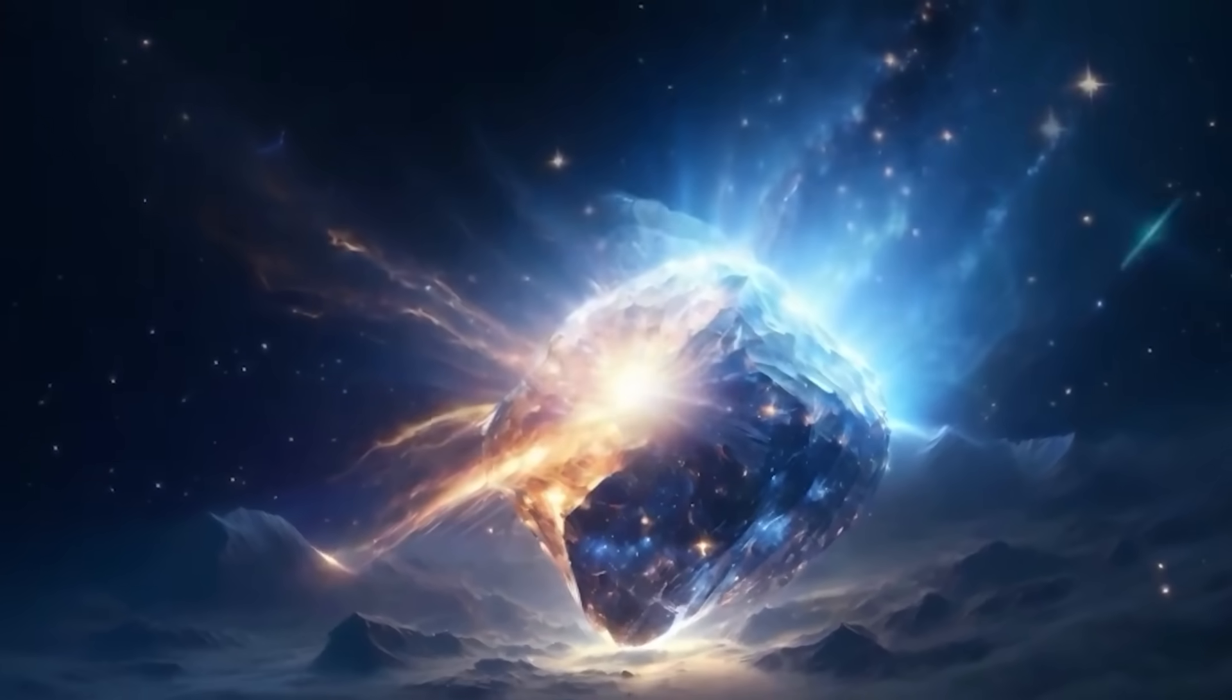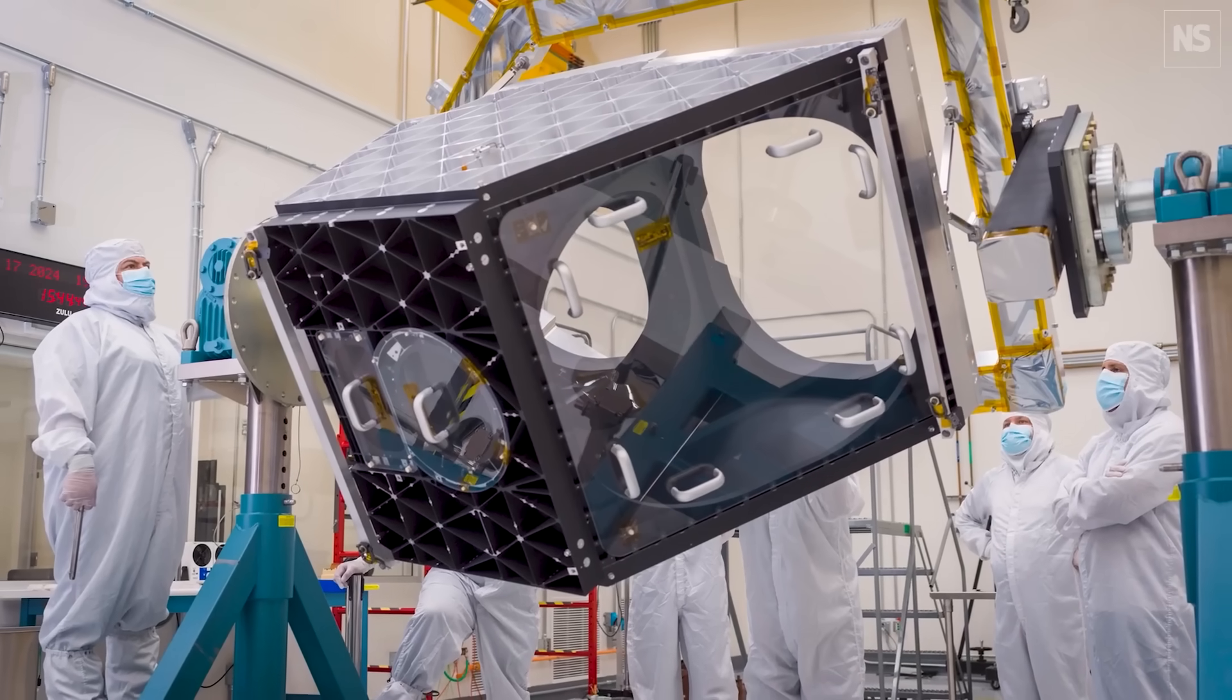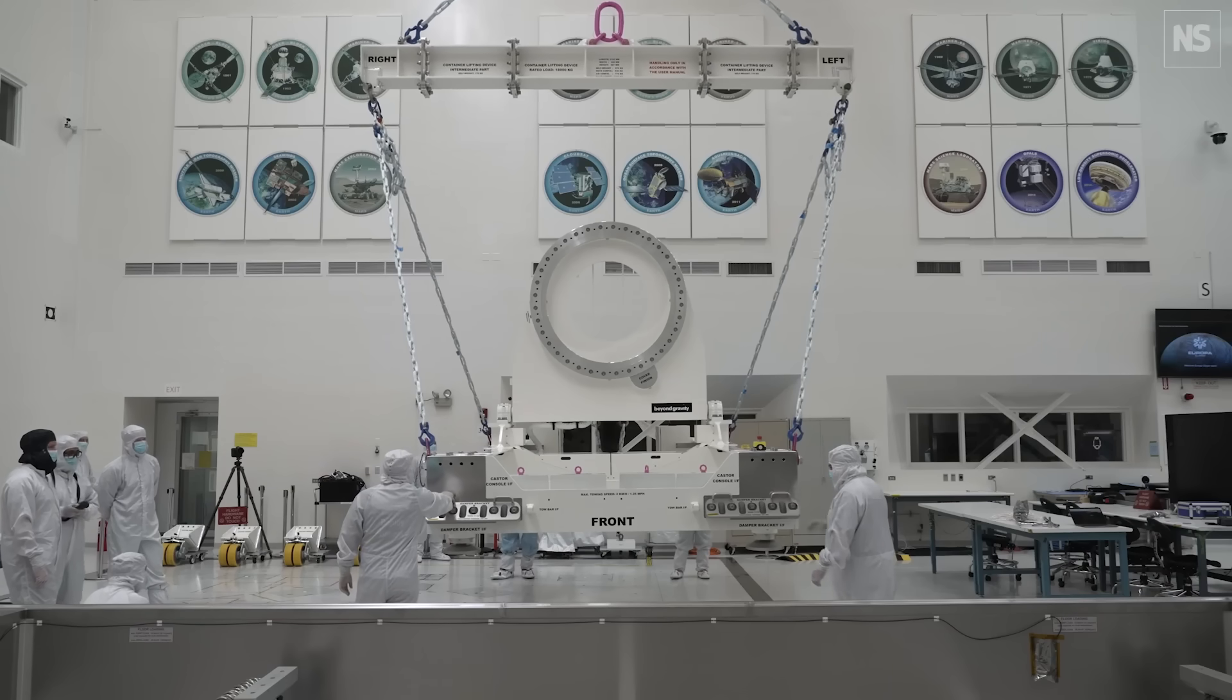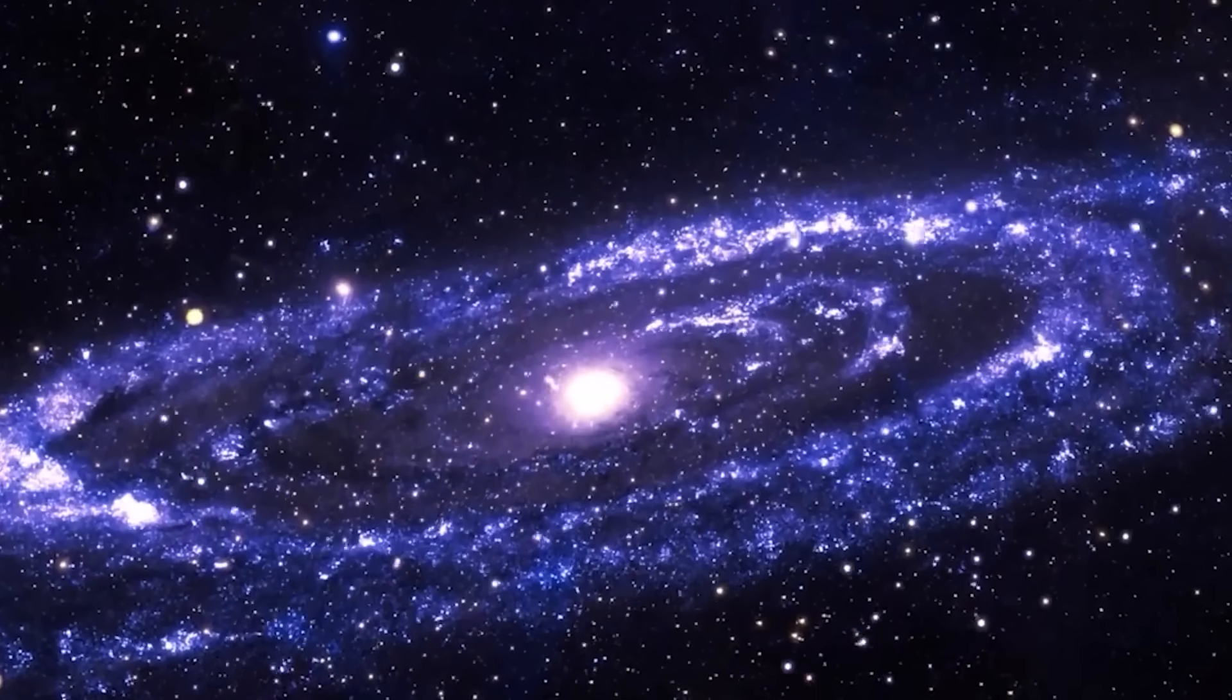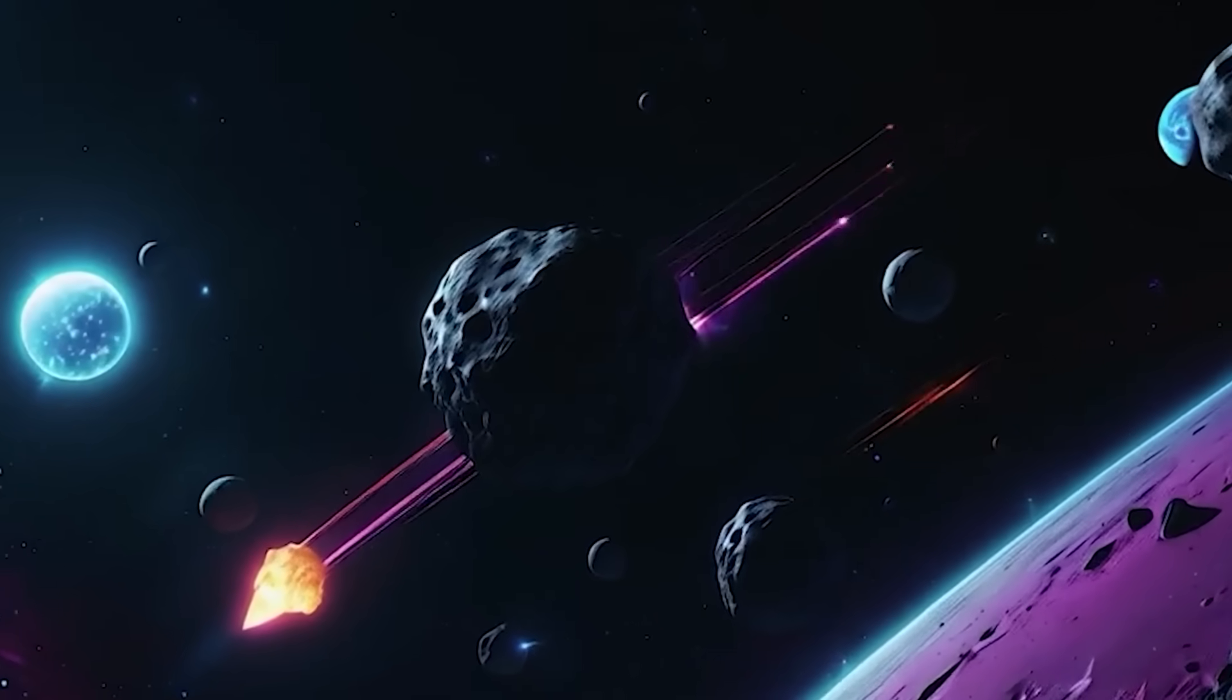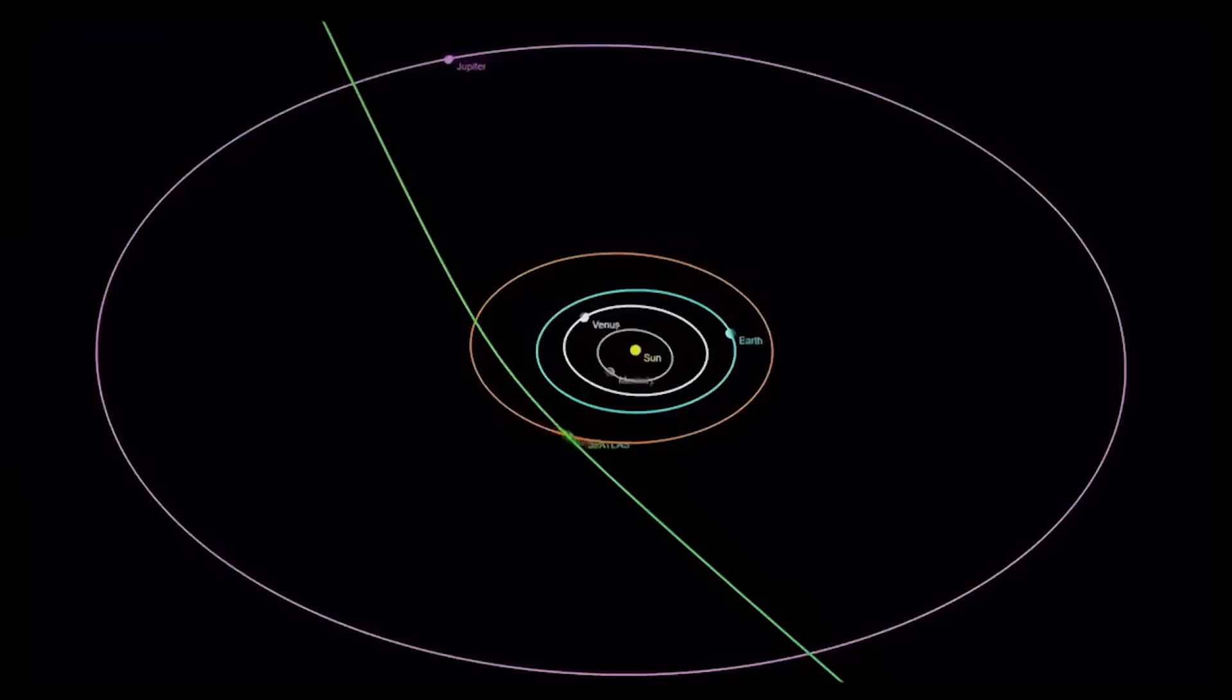3i Atlas arrived from coordinates near an unexplained signal source, moved with precision defying statistical probability, and exhibited chemistry that blurs distinctions between natural debris and purposeful architecture. ESA provided transparent data access. NASA's information flow decreased without detailed explanation. One agency opened the archive. The other restricted access. Whether cosmic statistical outlier or deliberate construct traversing stellar distances, it forced humanity to confront an uncomfortable question. Are we observing the universe passively, or does observation flow in both directions? If this represents one traveler, how many others drift undetected in the dark between stars? When the next arrives, will we recognize the pattern, or will we categorize it as another anomaly and move on? The answer may already exist in the data. We simply need to recognize that what appeared impossible has become undeniable.